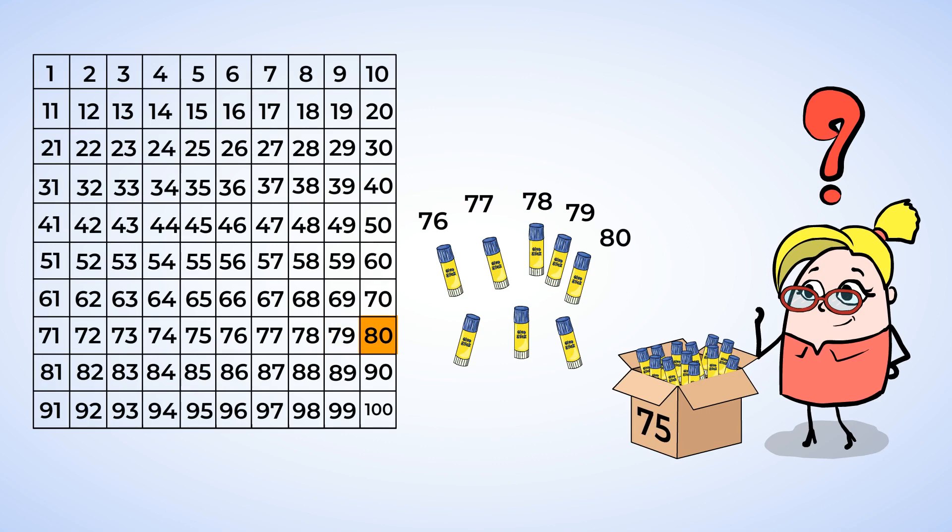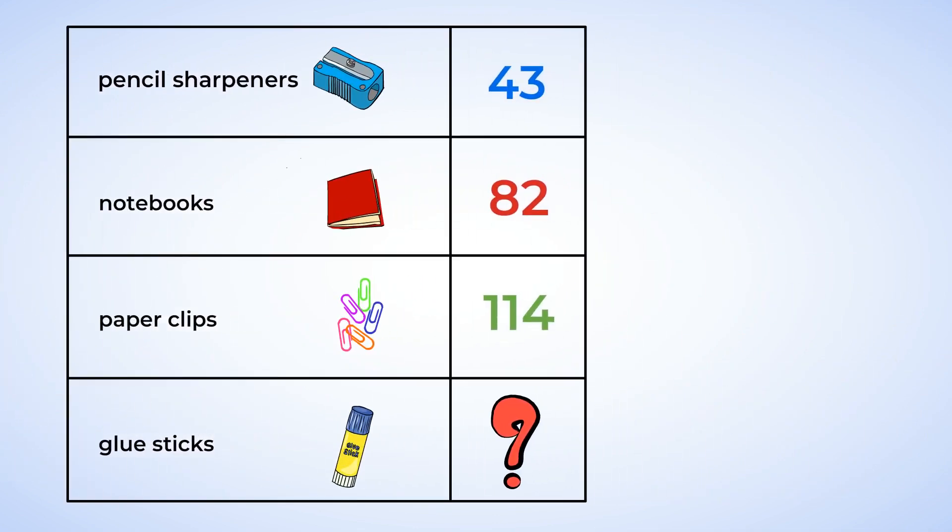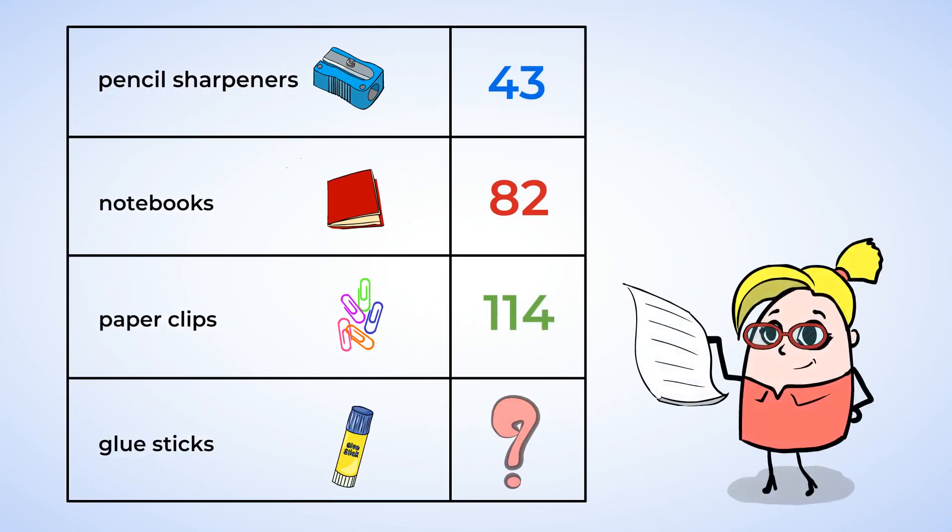But we still need to count three more. So let's jump to the next row and keep on going. 81, 82, 83. There are 83 glue sticks in all. We're going to write the number 83 on the list next to where it says glue sticks. And we're done.